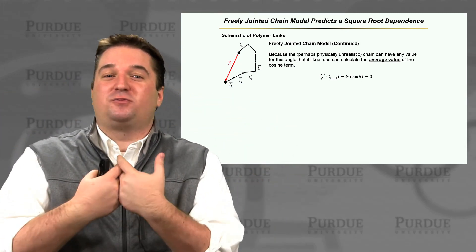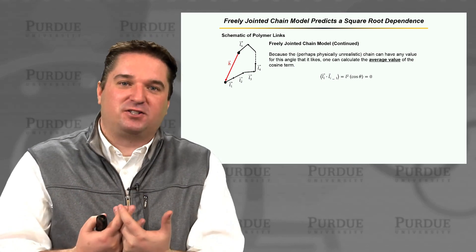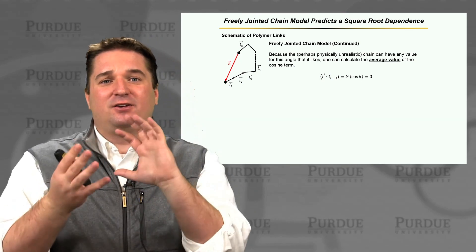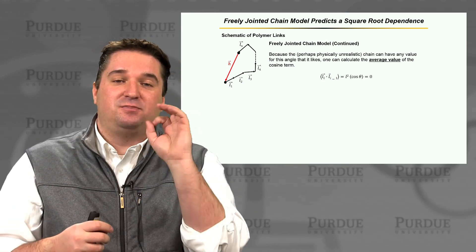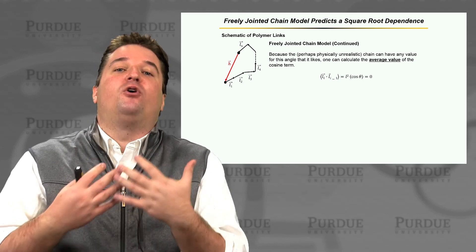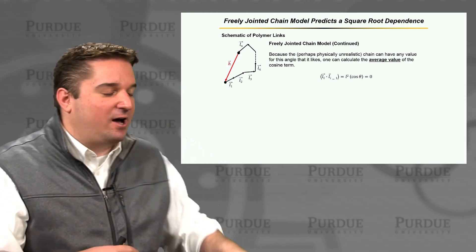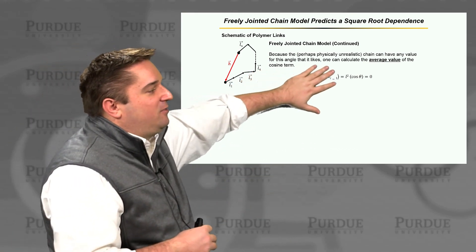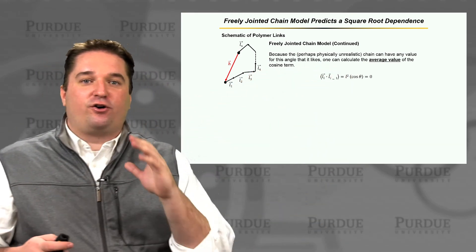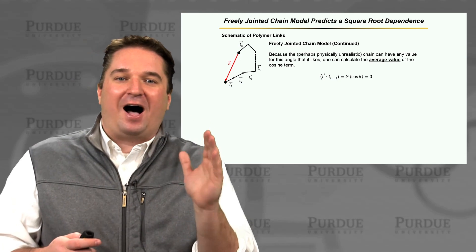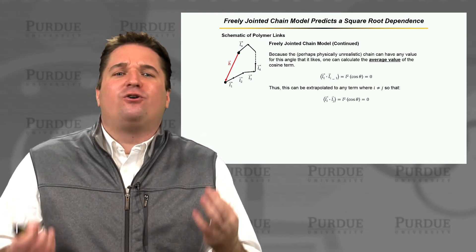So if we do this over all space with a large number of possibilities, that cosine theta term will eventually average out to be zero. It will have no preference about where it goes. And if that's the case, L squared cosine theta is going to be equal to zero. So now our cross product terms for all i does not equal j are all going to be zero.